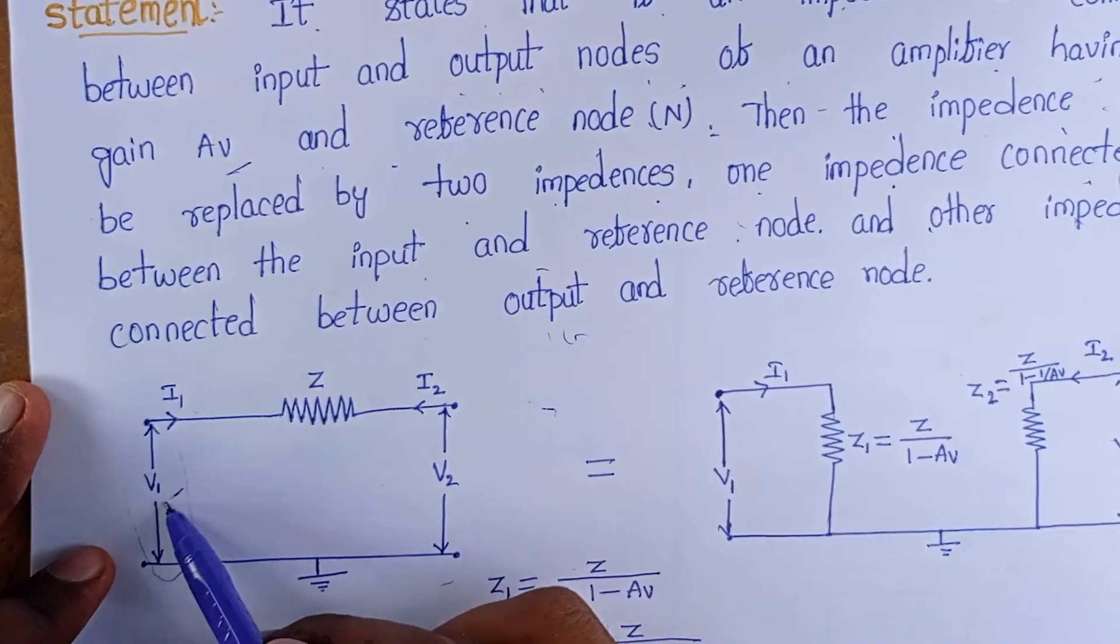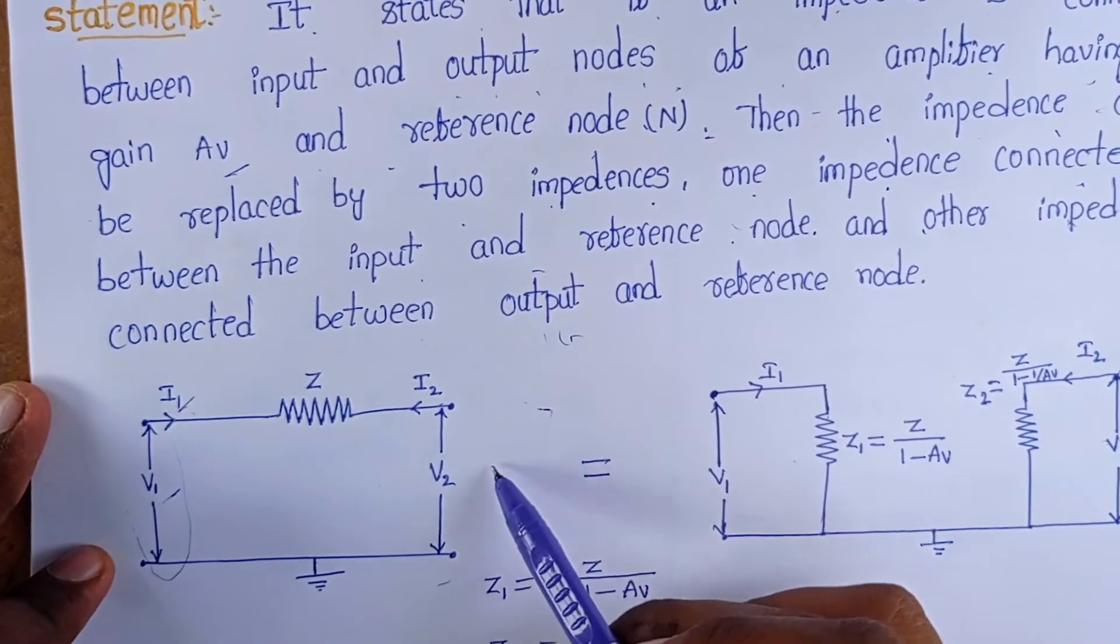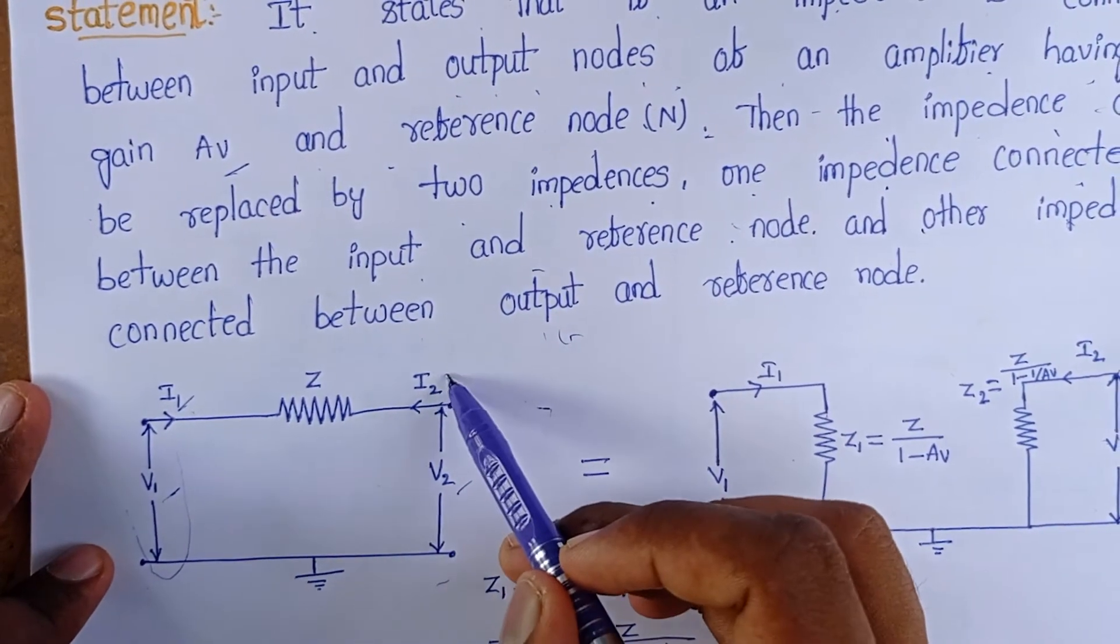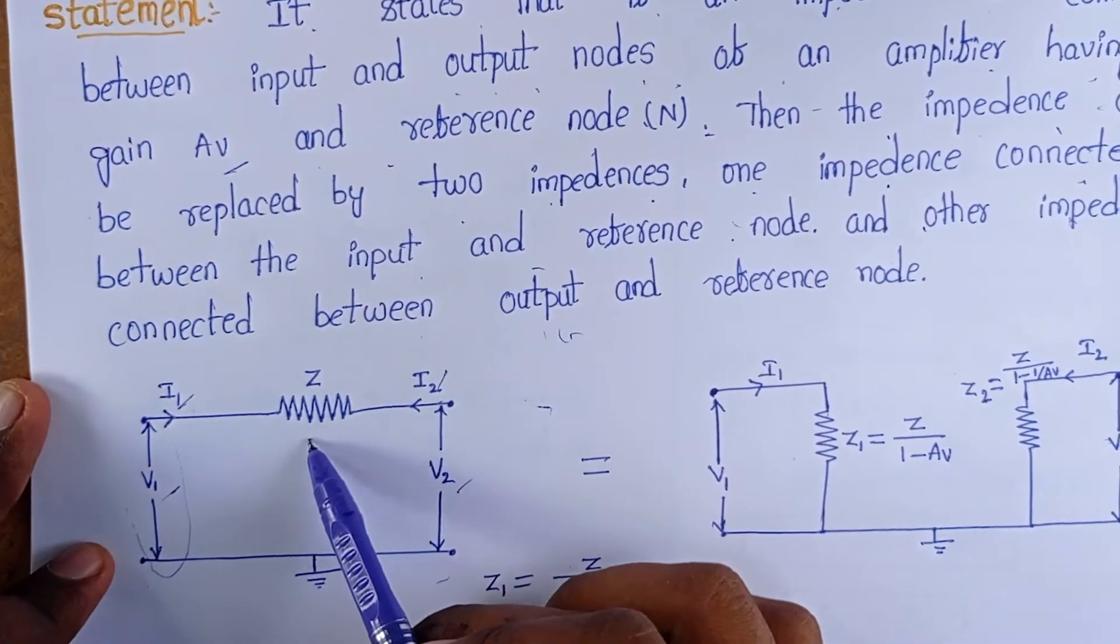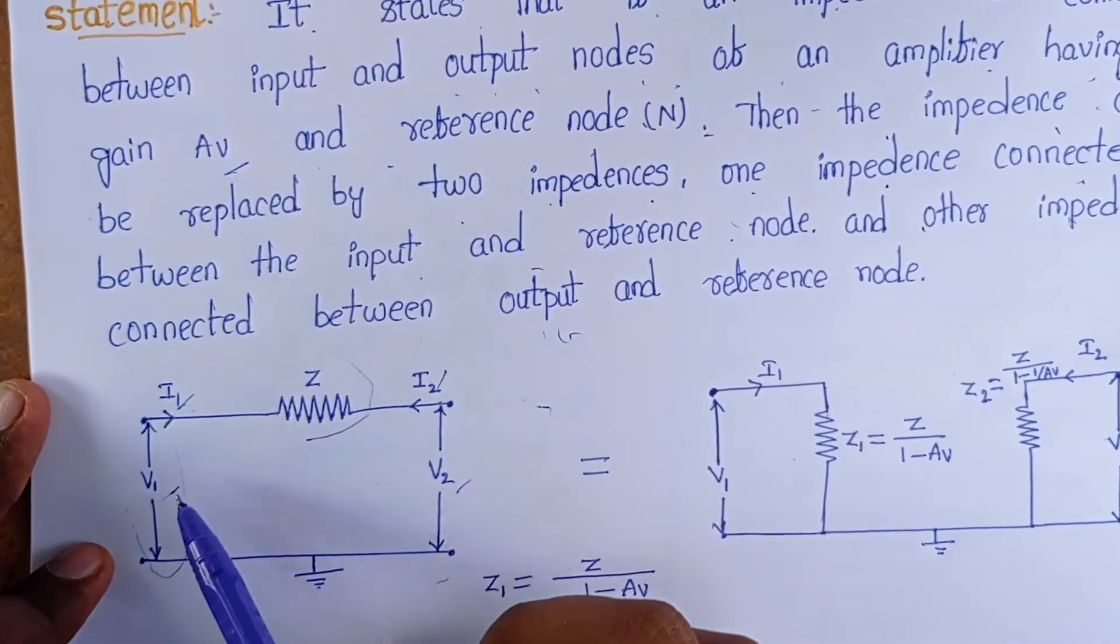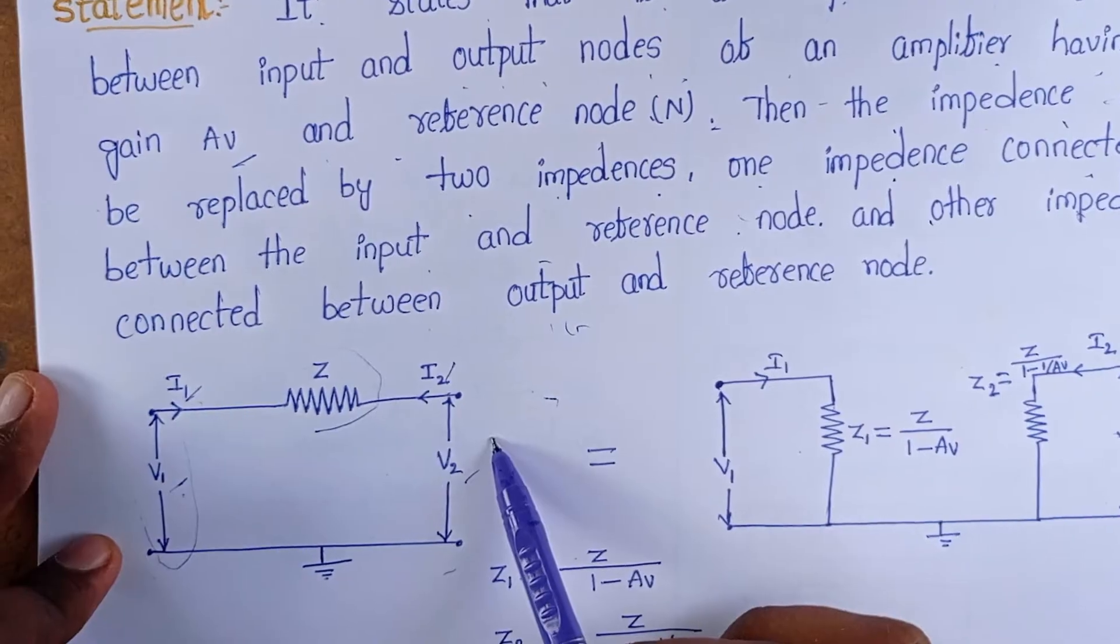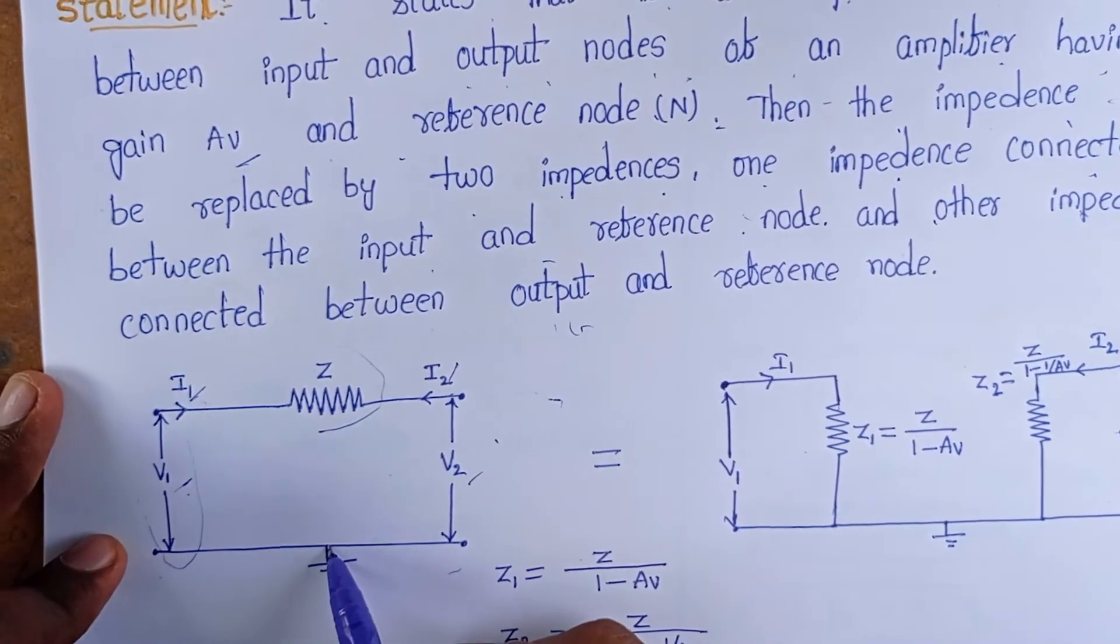Input voltage is V1 and input current is I1. Output voltage is V2 and output current is I2. Here I connected an impedance Z in between the input and output terminals. This is the reference node.